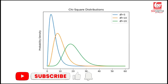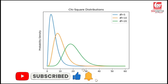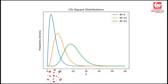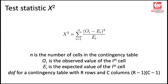We are talking about the chi-square distribution, which is a positive distribution that depends on the degrees of freedom. As the degrees of freedom increase, it tends to become more symmetric or bell-shaped. The test statistic is the chi-square statistic, calculated as the sum over all cells of the difference between observed and expected values squared, divided by the expected values.